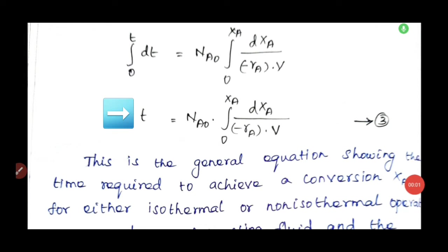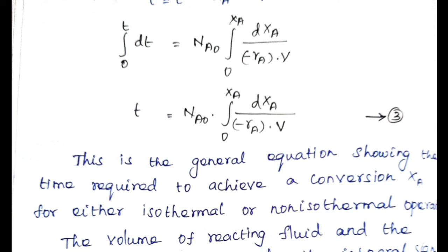Equation 3 is the general performance equation, showing the time required to achieve a given conversion XA. It applies for either isothermal or non-isothermal operation. We can simplify this general equation for two situations: a varying volume system and a constant density system.